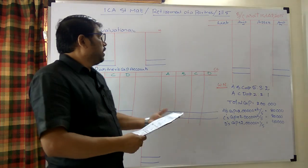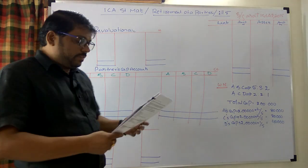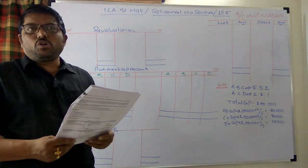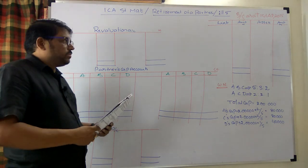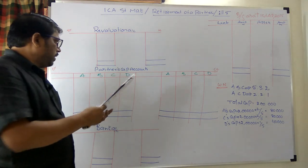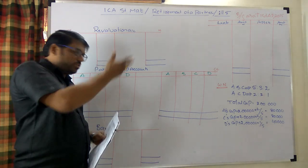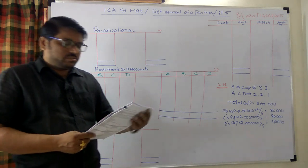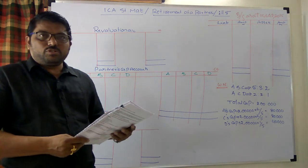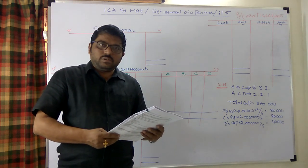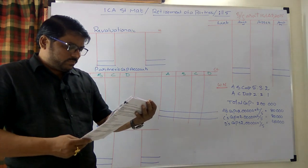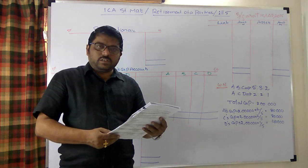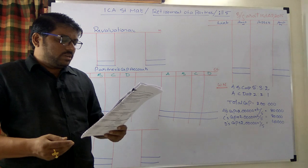Hi friends, today we are going to discuss again from the ICAI study material — retirement of a partner, illustration 5. I don't want to waste much of your time, so I have already drawn the lines for the revaluation account, partners' capital accounts, balance sheet, bank account, and the required working notes. I want to make it 100% useful and fruitful.